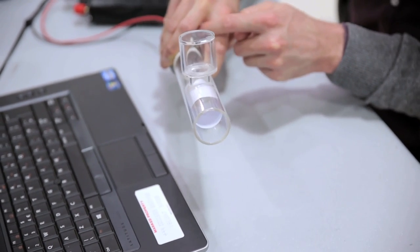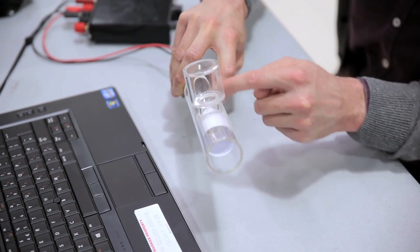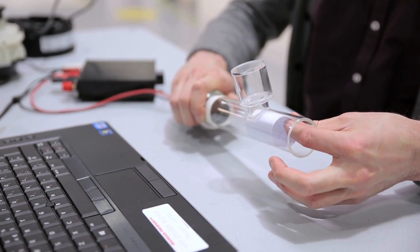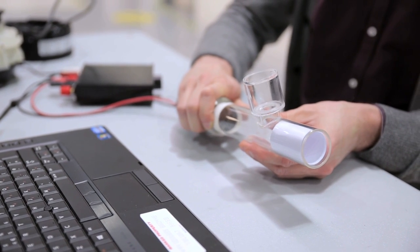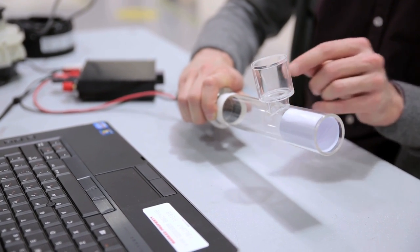so the sound waves travel from the speakers along the tube and then exit and you can hear it. Now if I unblock the silencer, the sound is being attenuated.